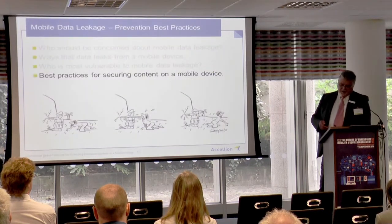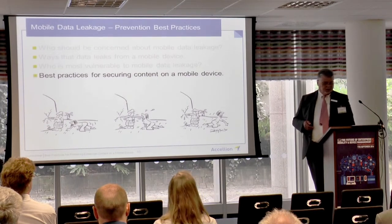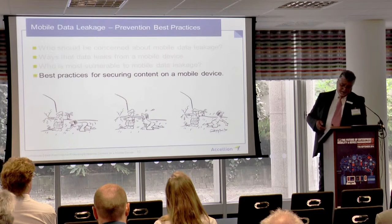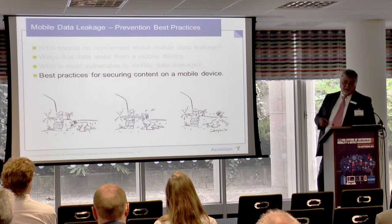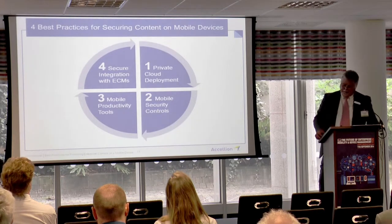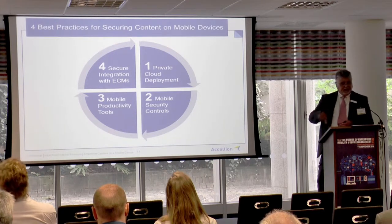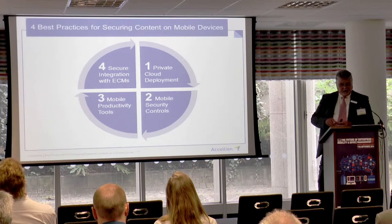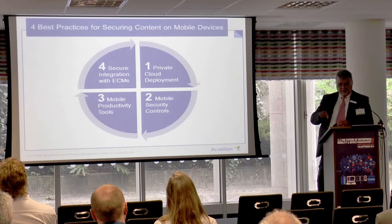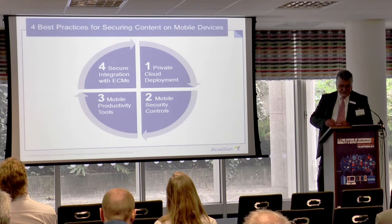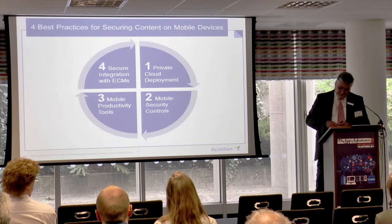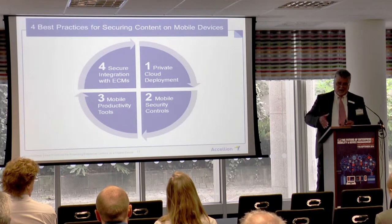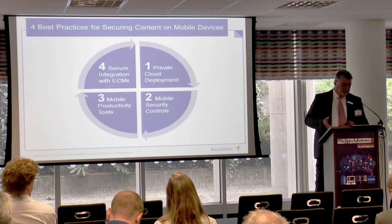Let's talk about some best practices — things that we've come across and that we deploy within our applications to make it easier to avoid and control some of these issues. I've broken this down into four main areas. First, private cloud deployments — this is probably the number one way in which organisations, particularly in Europe and specifically in the regulated industries, are seeking to provide a lot more control over the content on these devices. There are various mobility security controls that can be deployed, and I'll go through some of those that make it easier to lock down and control that content while still making it readily available and usable to end users.